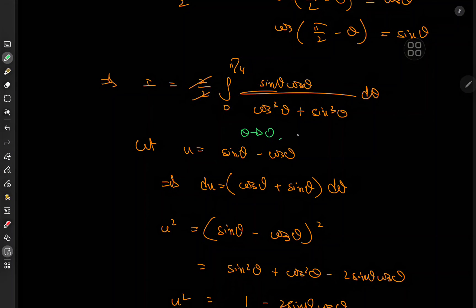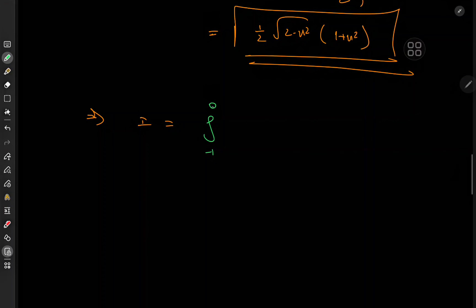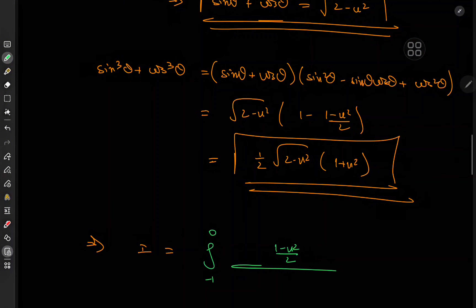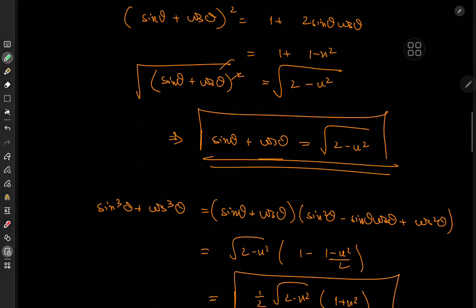So the new limits are from −1 to 0. The numerator has the cross term (1 − u²)/2, and the denominator is (1/2)·√(2 − u²)·(1 + u²). The differential element: since du = (cosθ + sinθ)dθ = √(2 − u²)·dθ, we have dθ = du/√(2 − u²). Substituting, the factors of one half cancel and the √(2 − u²) terms cancel as well.